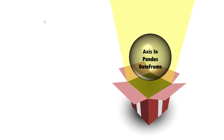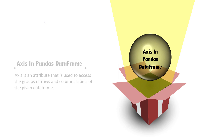Hi all, welcome back. Today we are going to discuss about one of the most common parameters in Pandas DataFrame, and that is the axis parameter. You will find this parameter in almost all the methods in Pandas DataFrame. So what is an axis parameter in Pandas DataFrame?